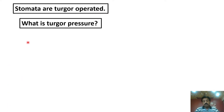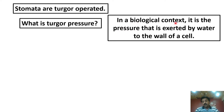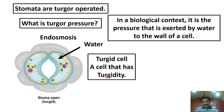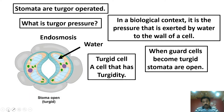Dear students, what is turgor pressure? In a biological context, it is the pressure that is exerted by water on the cell wall of a cell. When water enters the cell via endosmosis, vacuolar volume increases, water pressure is applied on the cell wall, and the cell is called turgid. Stomata open when guard cells become turgid. When water leaves by exosmosis, guard cells become flaccid and stomata close.